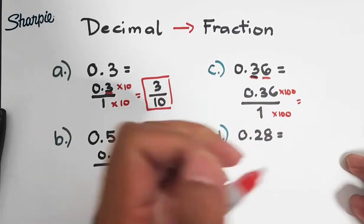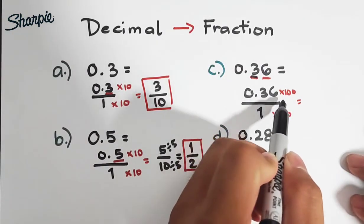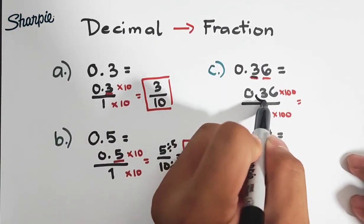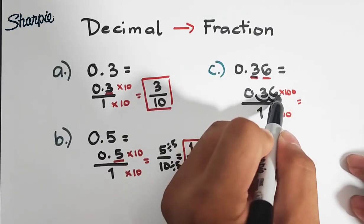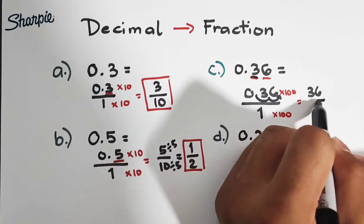So we have now 0.36 times 100, mag-move lang tayo ng dalawa. 1 and 2. So that is 36. And 1 times 100, this is 100.